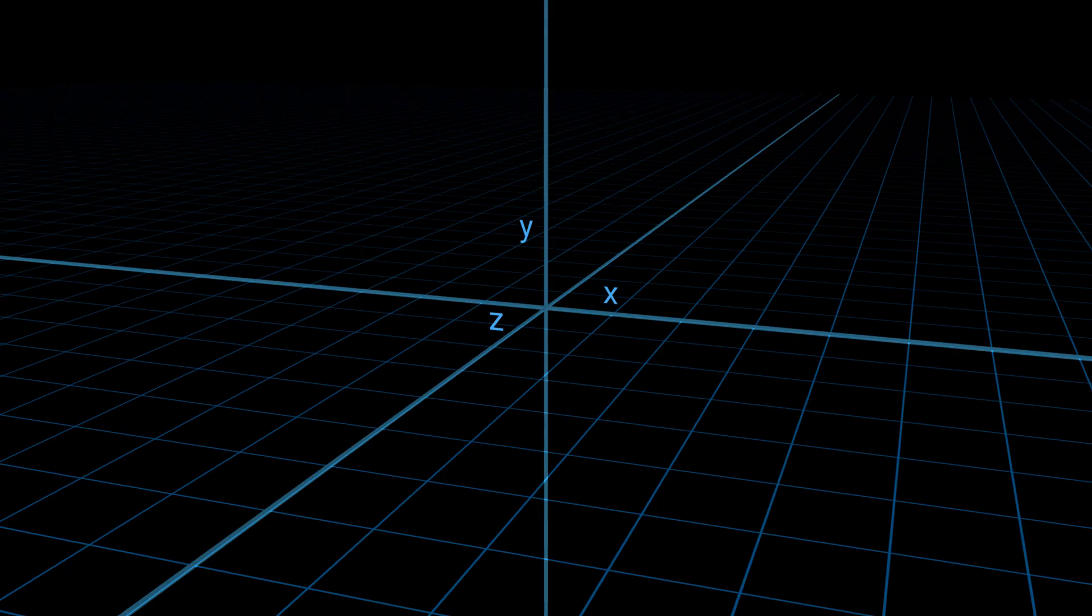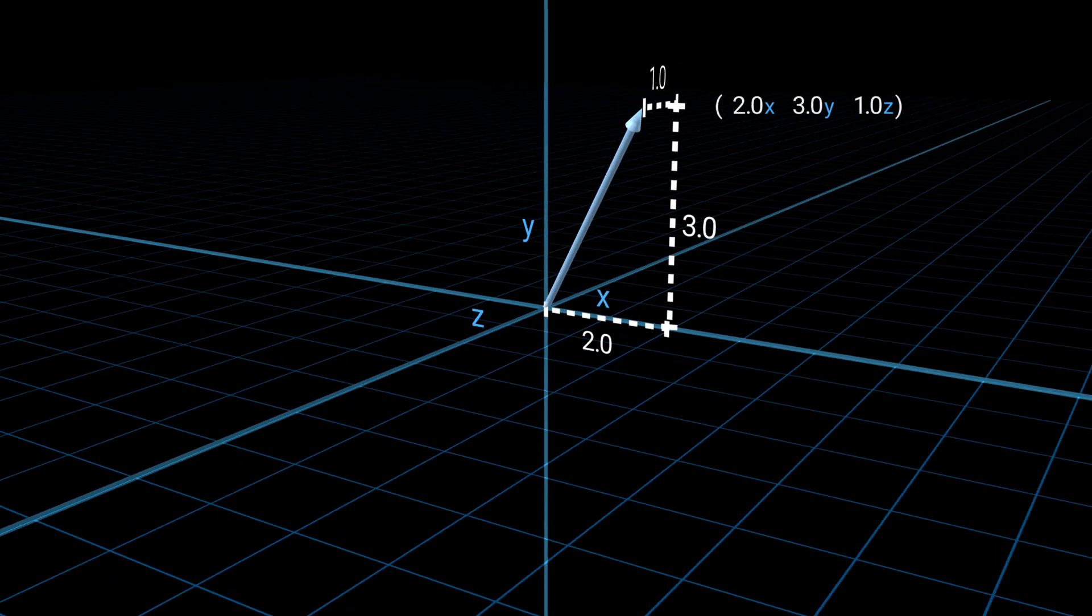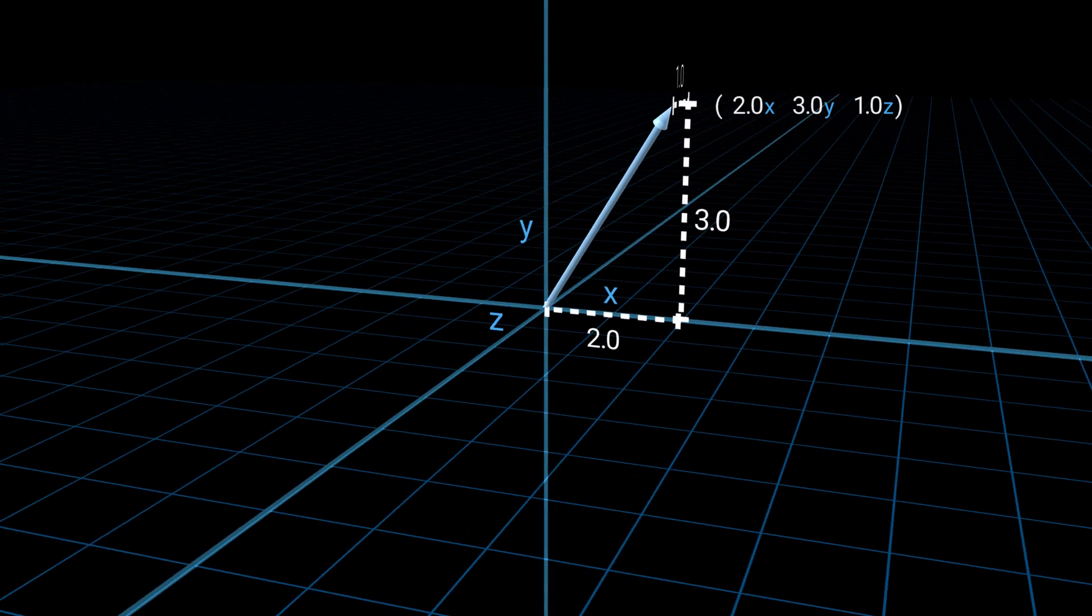And now a three-dimensional space. Everything here is basically the same except we now have another axis and another component. Here's an example of addition.